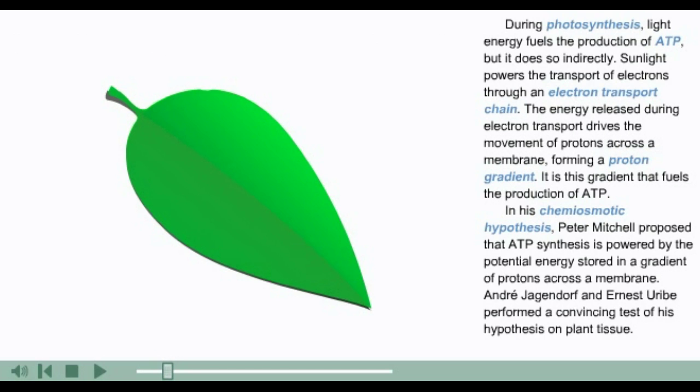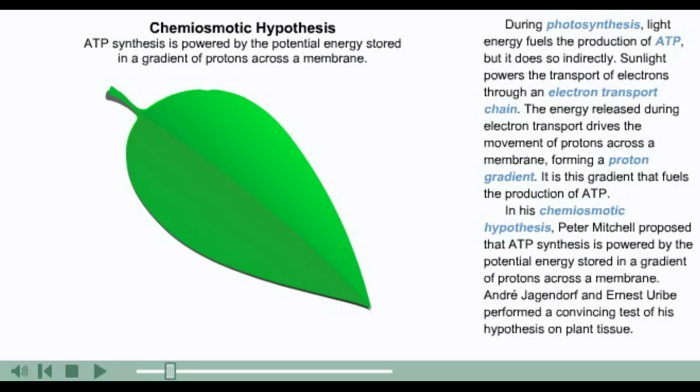In his chemiosmotic hypothesis, Peter Mitchell proposed that ATP synthesis is powered by the potential energy stored in a gradient of protons across a membrane. Andre Jagendorf and Ernest Uribe performed a convincing test of his hypothesis on plant tissue.